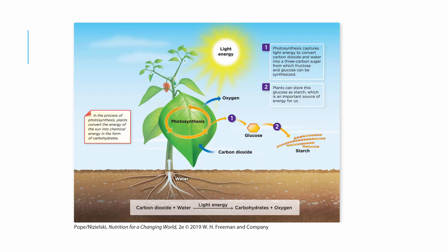This slide briefly covers the process of photosynthesis, which you may have heard about in earlier science classes. Photosynthesis basically captures light energy to convert carbon dioxide and water into a three-carbon sugar, which can then make fructose or glucose, and plants can store this as starch. This shows the cycle of how we get carbohydrates from the plants we consume.